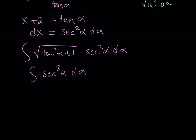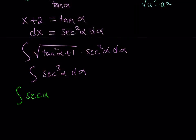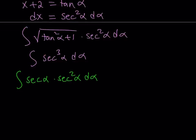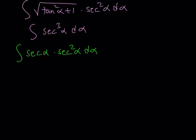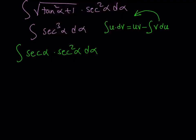Now we need to integrate secant cubed alpha, which is an interesting function. We'll separate it into two powers and write it as secant alpha times secant squared alpha d alpha. For this integral we'll use integration by parts. The formula says: the integral of u dv equals uv minus the integral of v du. This comes from the product rule for derivatives. We pick dv as something easy to integrate — secant squared is the better candidate since integrating secant alone is not straightforward.